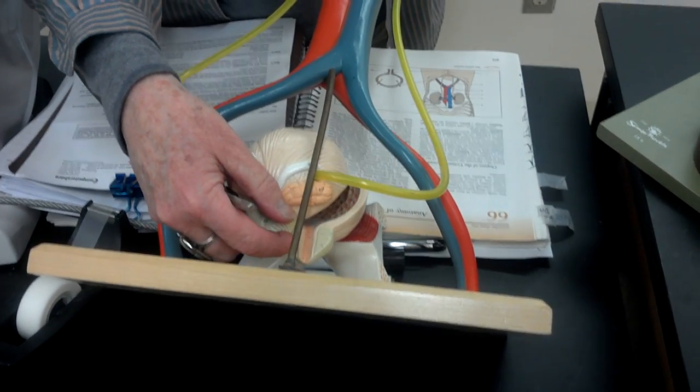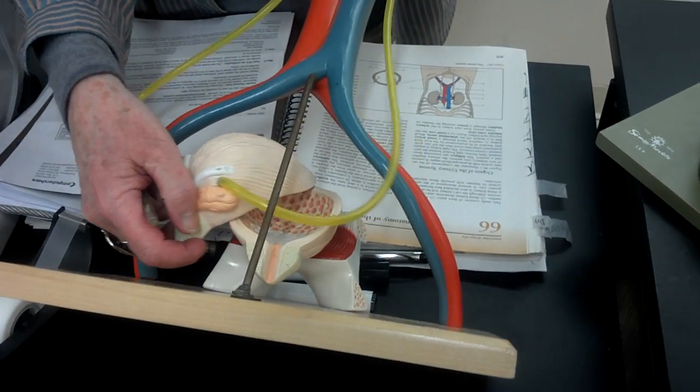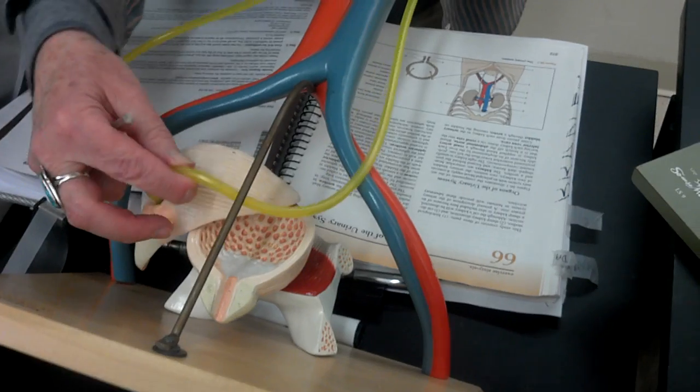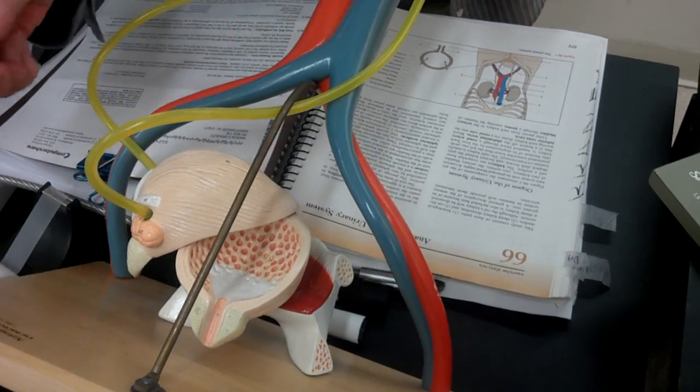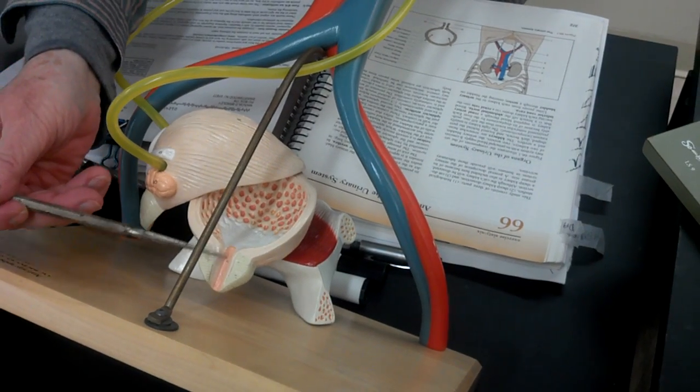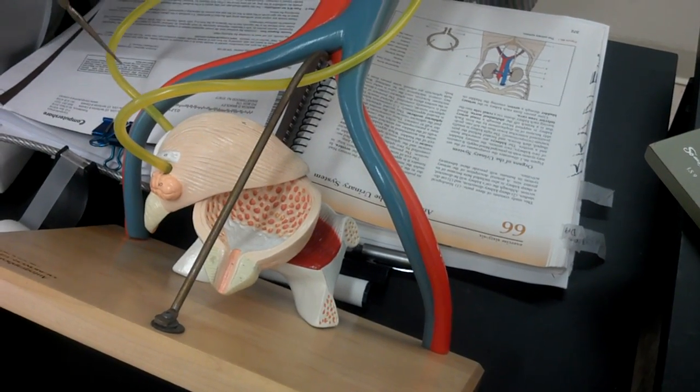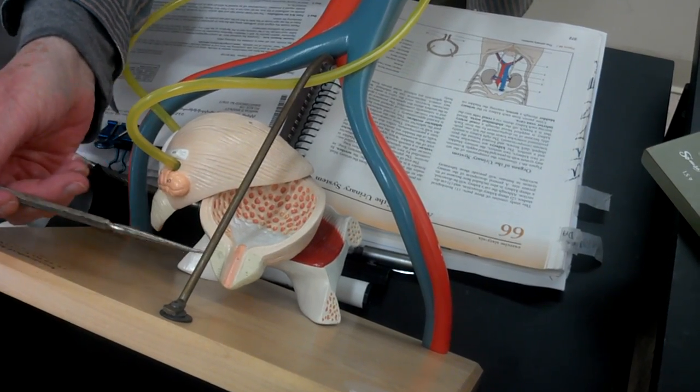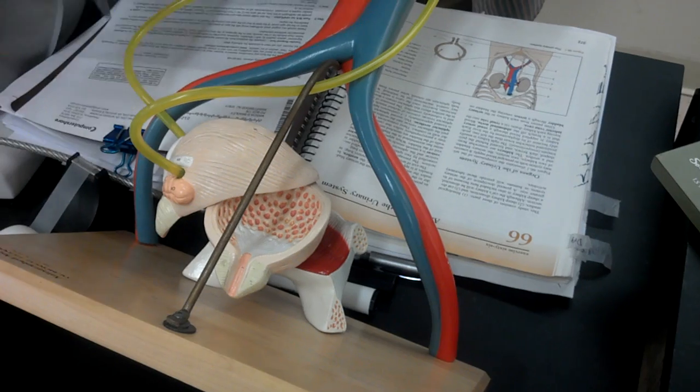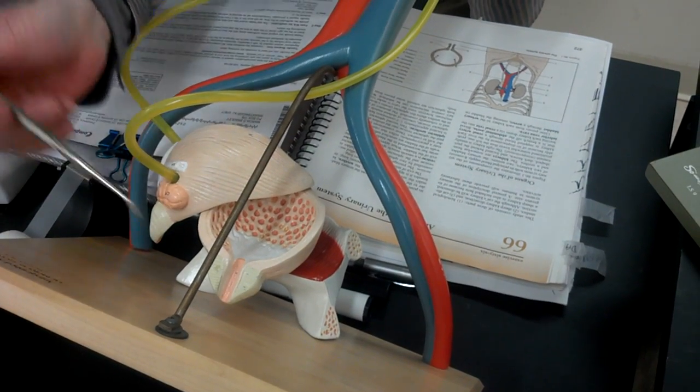Now I'm going to just push this aside so that you can see the inside of this bladder. And when you look at the inside of the bladder, you see the urethra. So you have two ureters and one urethra.